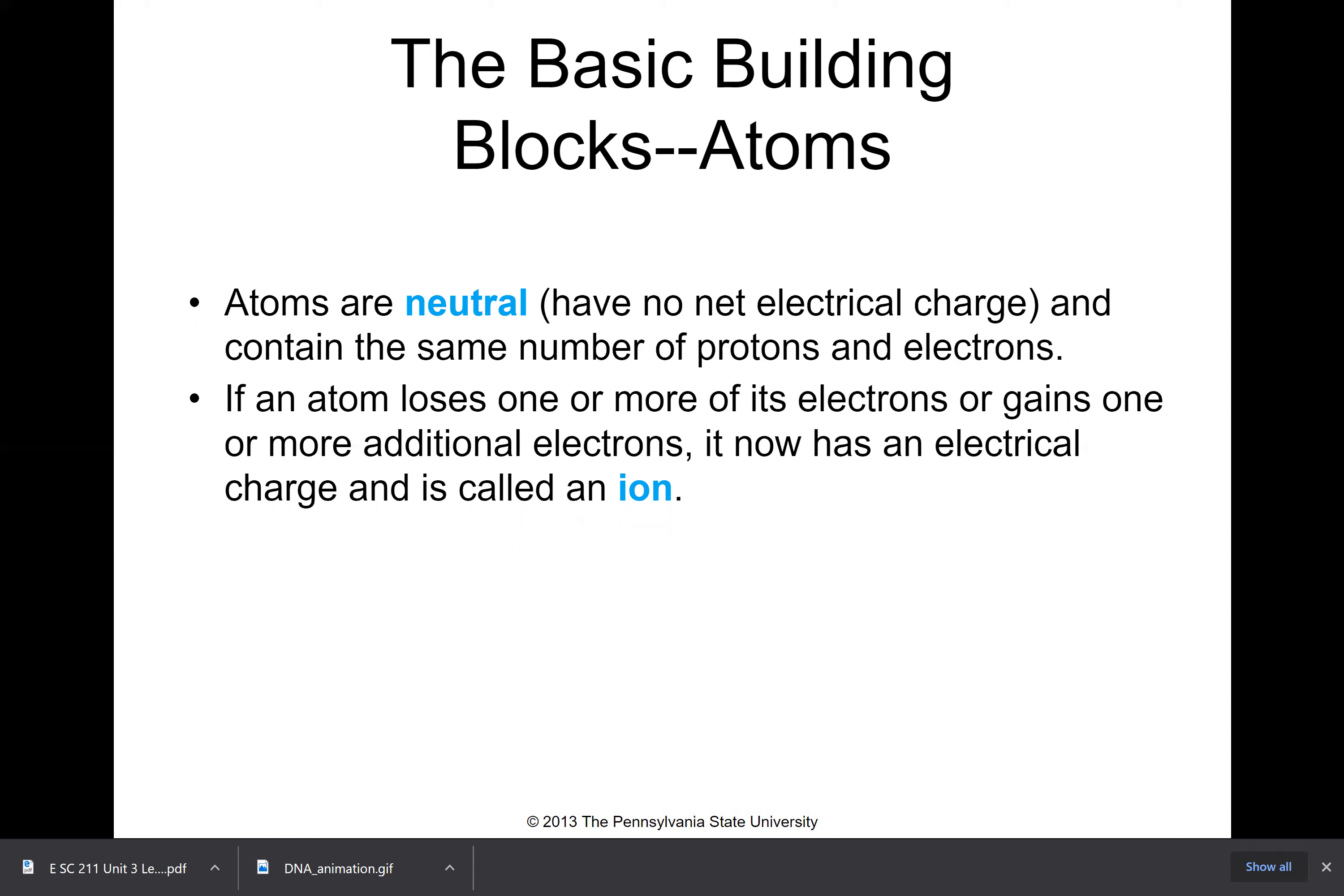If an atom loses one or more of its electrons or gains one or more additional electrons, it has an electrical charge and it is called an ion. So if it loses an electron, it's going to have a positive charge because electrons are negative. If it gains a negative electron, it'll have a negative charge.